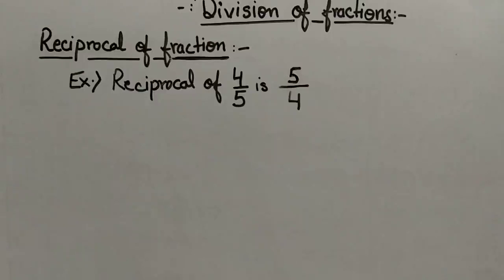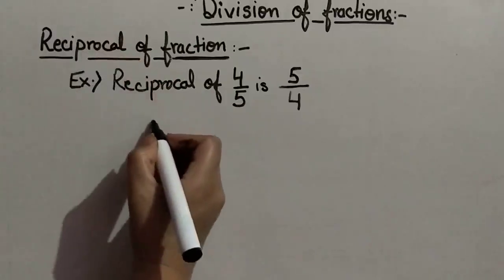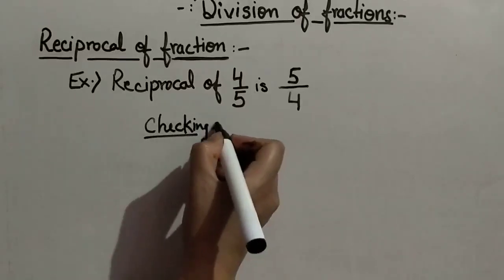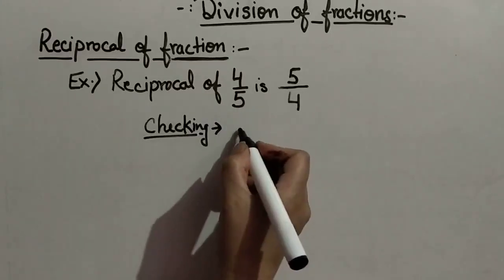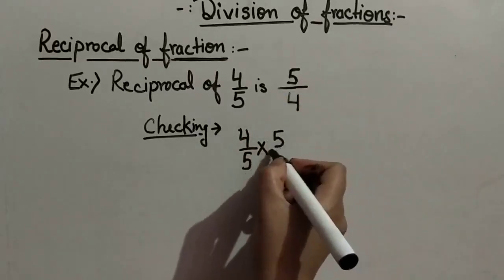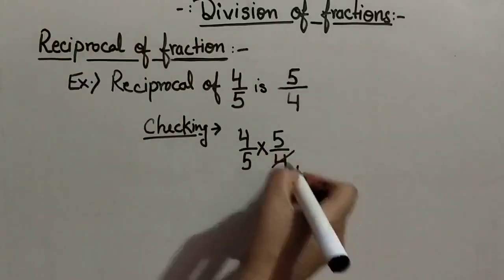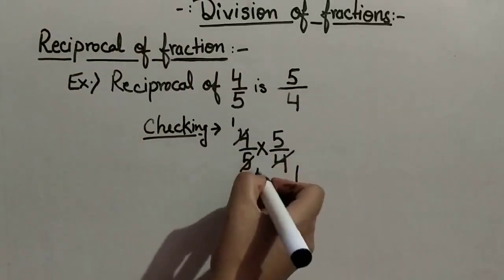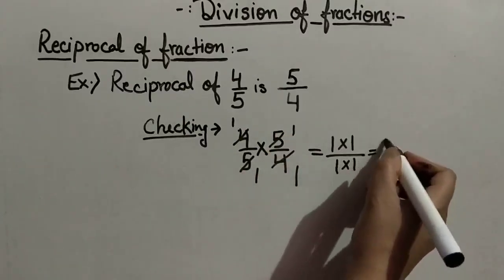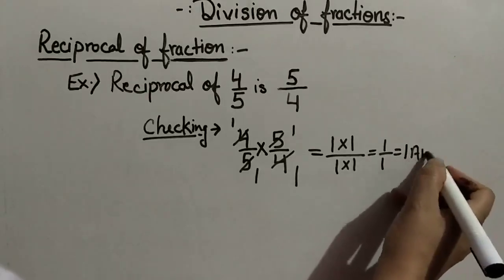Here I want to tell you one thing: the product of a fraction and its reciprocal is 1. Let us check it. The fraction multiplied by its reciprocal: 4 upon 5 multiplied by 5 upon 4. 4 ones are 4, 5 ones are 5, giving us 1 multiplied by 1 upon 1 multiplied by 1, equal to 1 upon 1, which is 1.